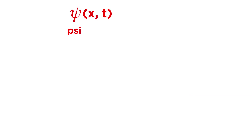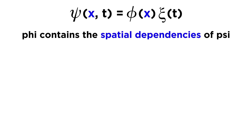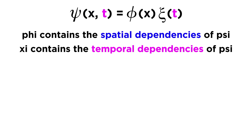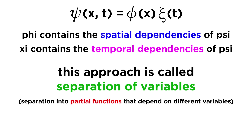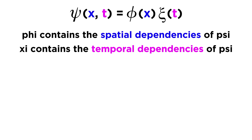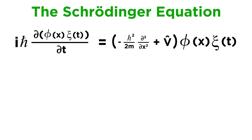Imagine that you have ψ(x,t). Let's write this function as being equal to the product of φ(x) and ψ(t). The way we are breaking this down is that φ(x) contains the spatial dependencies and ψ(t) contains the temporal dependencies of ψ(x,t). We call this separation of variables — the idea is to simplify calculations by separating a function into partial functions that depend independently on different variables. So φ only depends on x, and ψ only depends on t. Now we can plug this into the Schrödinger equation in place of ψ for both places where ψ shows up, and from here we can derive the time-independent Schrödinger equation.